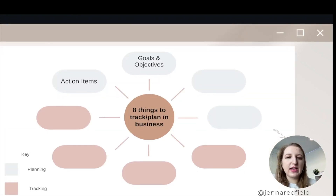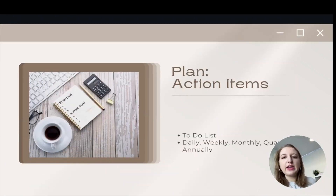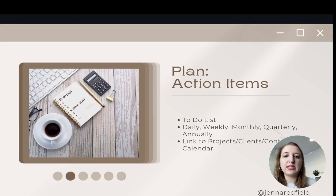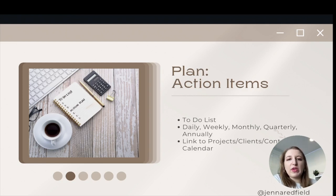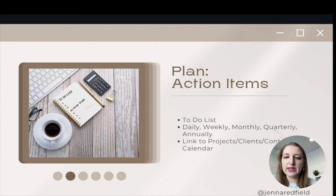The second thing that we are going to plan is action items. This is really your to-do list — your daily, weekly, monthly, quarterly, annually tasks. What do you have to do on a daily basis, not just for business but also personal? And then within Notion, linking that back to the projects, clients, and content calendar so that you know your action items fit into one of those different categories.